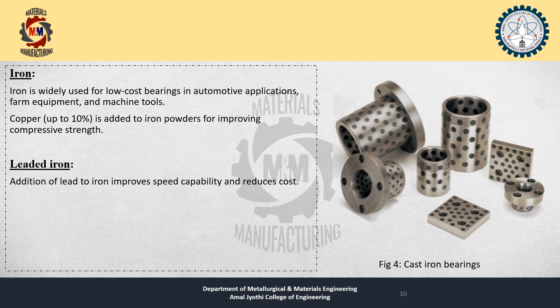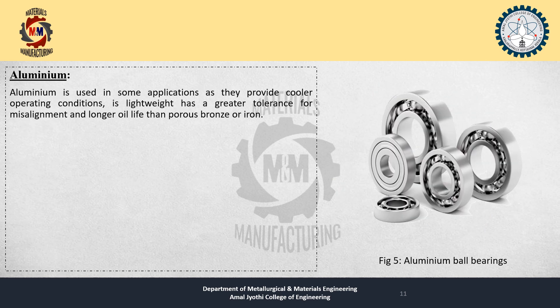Leaded iron: Addition of lead to iron improves speed capabilities and reduces cost. Aluminium is also used in some applications as it provides cooler operating conditions, is lightweight, and has great tolerance for misalignments and longer oil life than porous bronze or iron bearings. Figure 5 shows aluminium-based ball bearings.